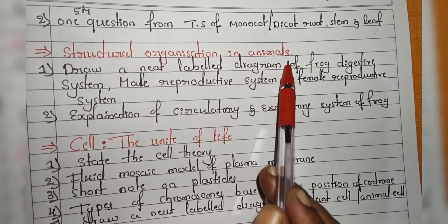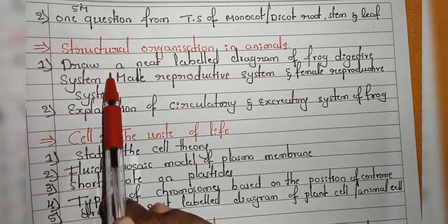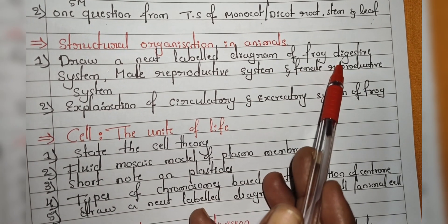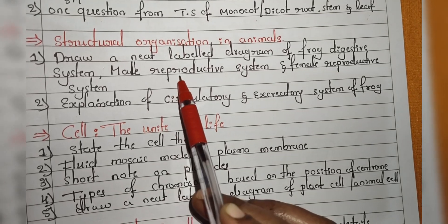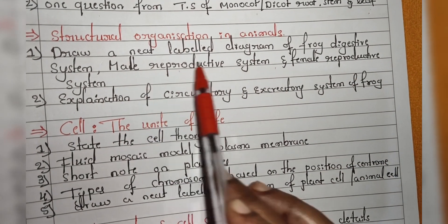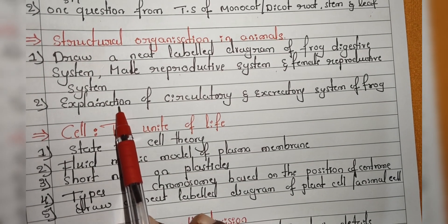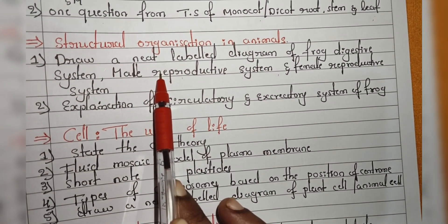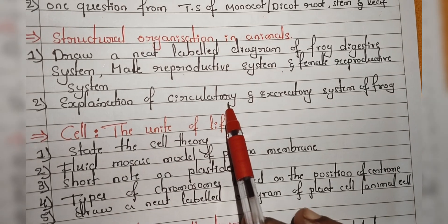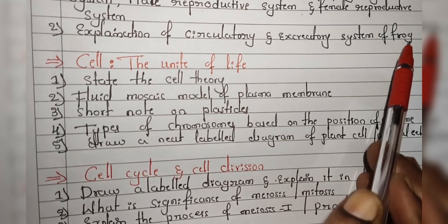Next chapter is Structural Organization in Animals. From this chapter, they will ask questions based on three main topics. First, draw a neat labelled diagram of the frog's digestive system, male reproductive system, and female reproductive system — from these three diagrams they will ask any one. If they do not ask a diagram question, they will ask for an explanation of the circulatory system and excretory system of the frog.